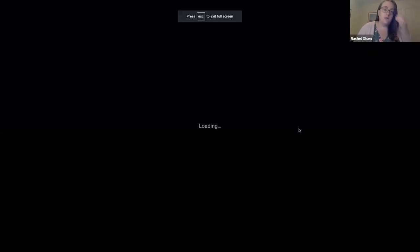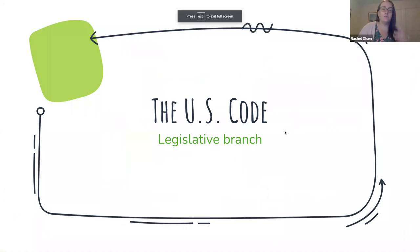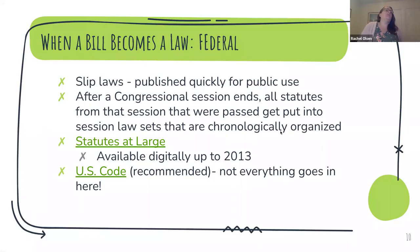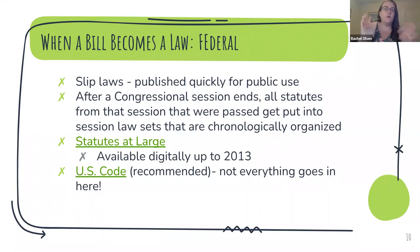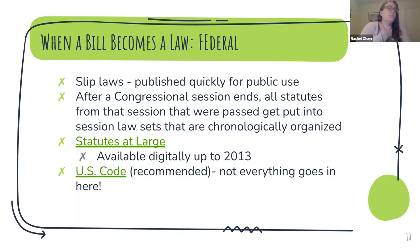So what happens when a bill becomes a law? When a bill becomes a law in Congress, after the president signs it, it goes into what are called slip laws. Slip laws are basically just the text of what the law literally says when it was passed — it goes into these bound volumes. They're published really quickly for public use. When a particular session of Congress ends, all the statutes from that session get put into chronological volumes called statutes at large.